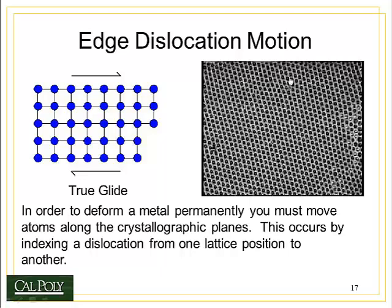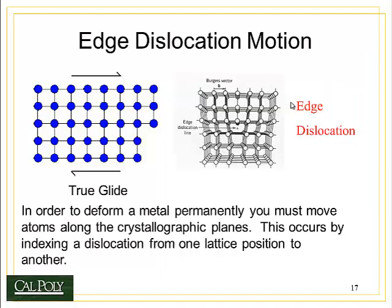If you look closely, you can see there's a dislocation sitting right here — an extra plane of atoms that doesn't belong — and you can see how the other planes of atoms have bent around to allow that plane to exist. That kind of dislocation is called an edge dislocation, and it's the most common type. The edge dislocation is an extra half plane of atoms that occupies a space between the normal planes. That extra half plane is a defect and it raises the energy of the system, but without it we would have no way of plastically deforming the metal.